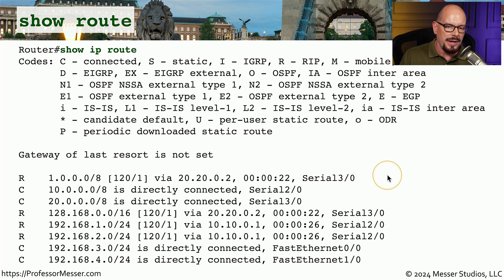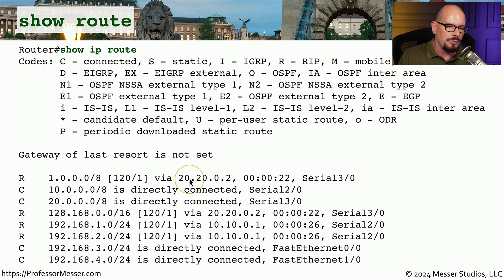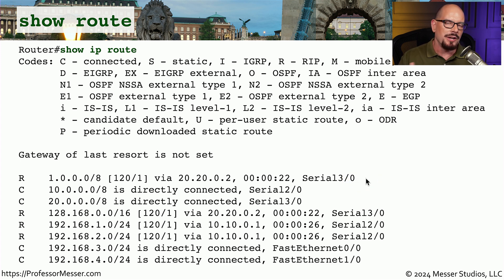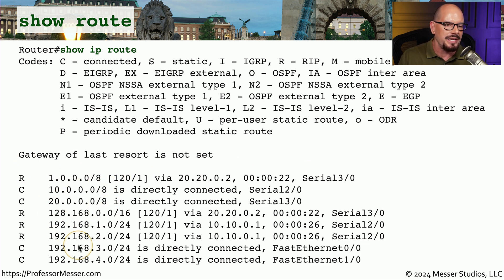This first line of the routing table is for all traffic that would need to go to 1.0.0.0/8. It would get to that route through 20.20.0.2, and you would reach that next hop by leaving serial 3/0 as the interface. There may be a more specific route inside of this routing table, so you would need to evaluate each one of these routes to see if you have a more specific route that could apply to your traffic.